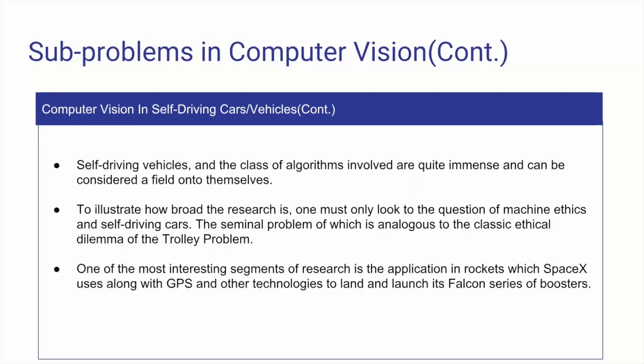One of the most interesting applications is in rockets. Going back to SpaceX, their Falcon boosters utilize reinforcement learning and computer vision algorithms to launch and land. They recycle boosters — entire parts of the rocket are saved and reused for future missions. These boosters navigate themselves back from low Earth orbit all the way to a lander in whichever ocean is nearest, entirely via computer vision and reinforcement learning algorithms, demonstrating just how powerful and world-changing these algorithms are becoming.